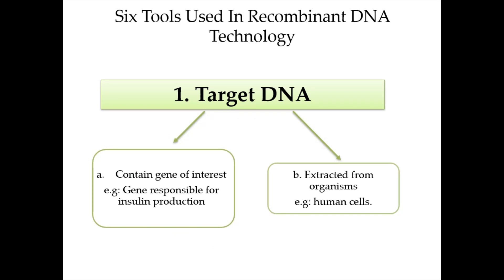Recombinant DNA technology was not developed quickly — after decades of research and accumulation of knowledge, the technology became highly developed and is now widely used for research and biotechnology applications. There are six tools used in recombinant DNA technology. The first is the target DNA, which contains the gene of interest — for example, a gene responsible for insulin production.